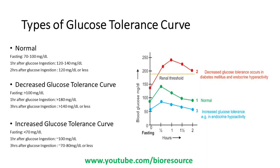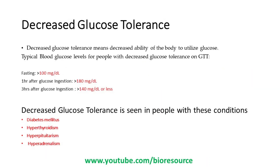In the case of an increased glucose tolerance curve, the fasting sugar will be much lower than normal. After one hour of ingestion it may not rise very high, remaining within the 100 mg per deciliter mark, and after three hours of glucose ingestion it will still remain at a lower level. The typical blood glucose levels for people with decreased glucose tolerance on GTT are: fasting greater than 100 mg per deciliter, one hour after ingestion greater than 180 mg per deciliter, and three hours after glucose ingestion still greater than 140 mg per deciliter.